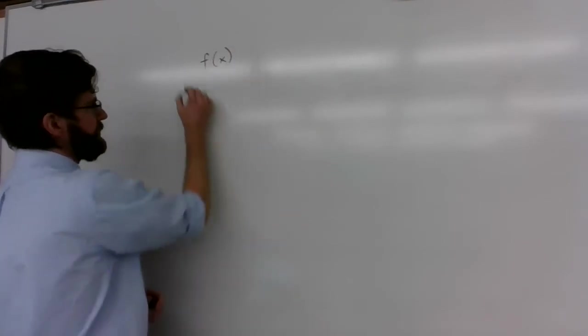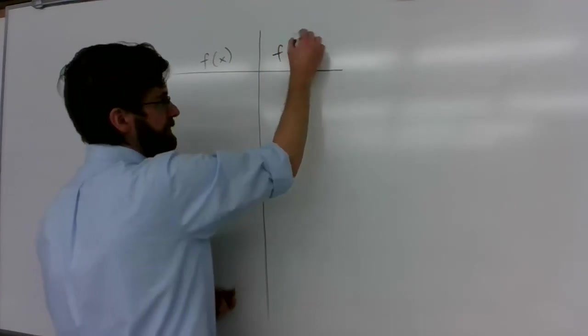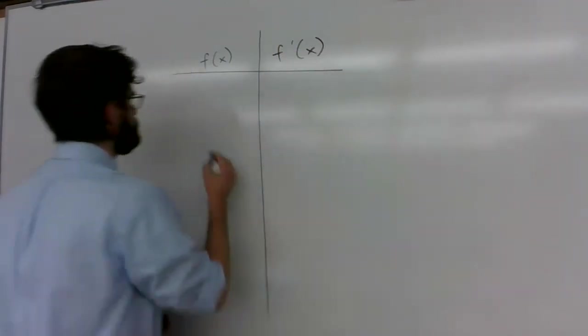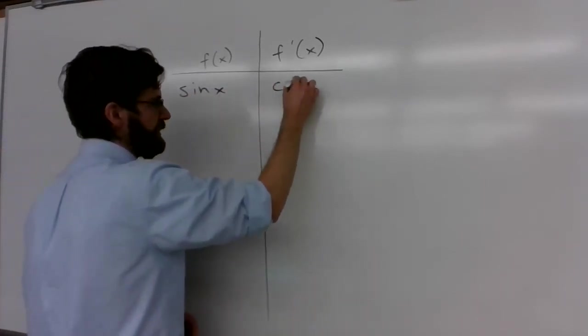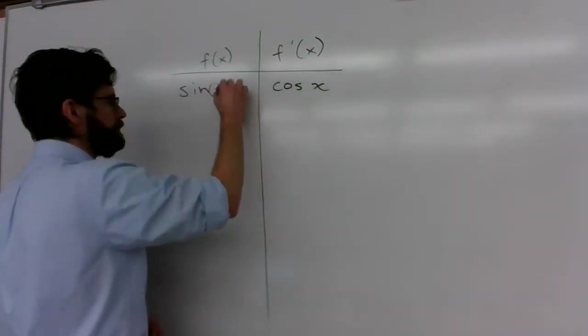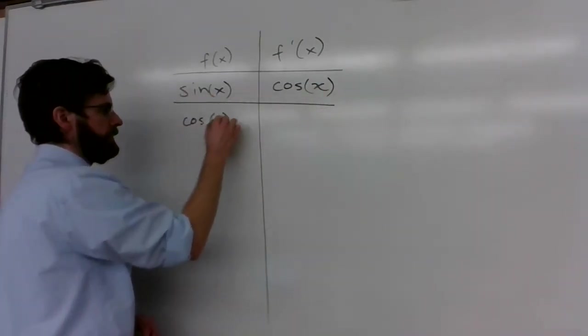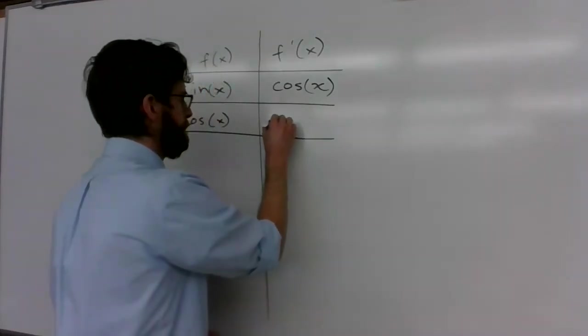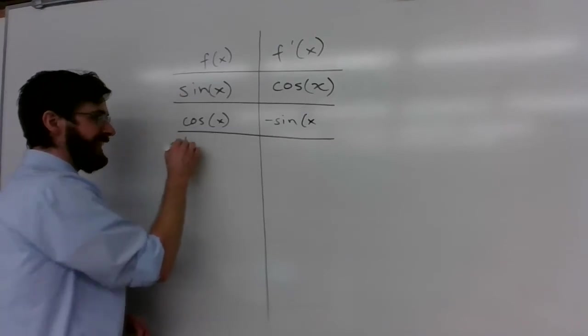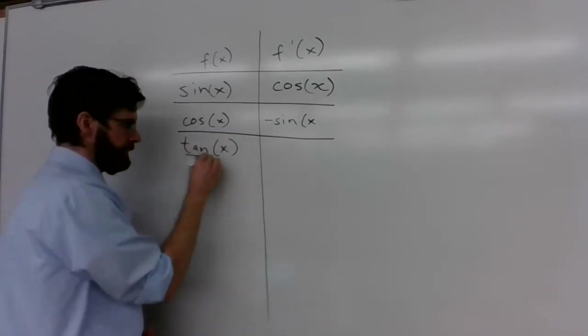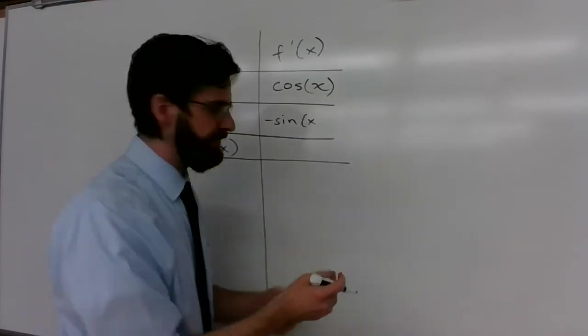So here's our chart. Original function f of x. Derivative. The derivative of sine of x is cosine of x. The derivative of cosine of x is negative sine of x. The derivative of tangent ends up being secant squared of x. Secant of x times secant of x.